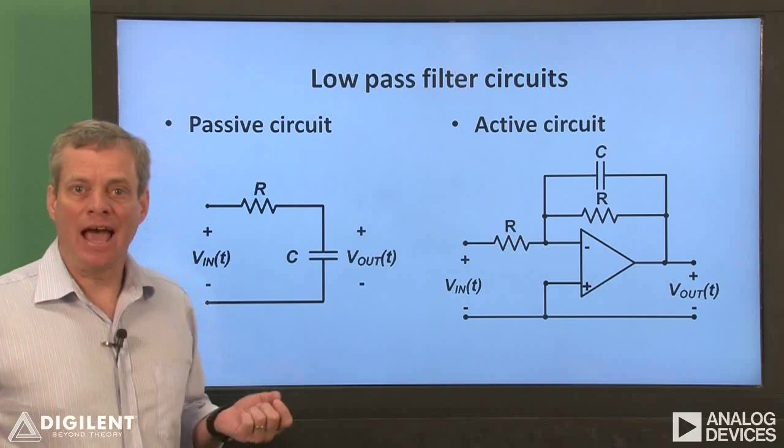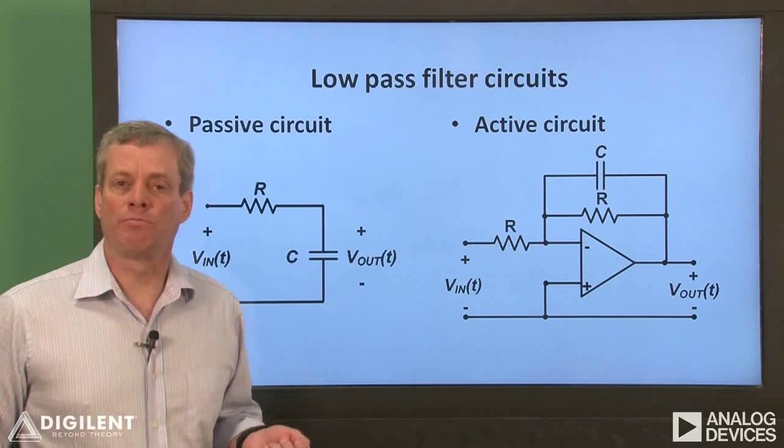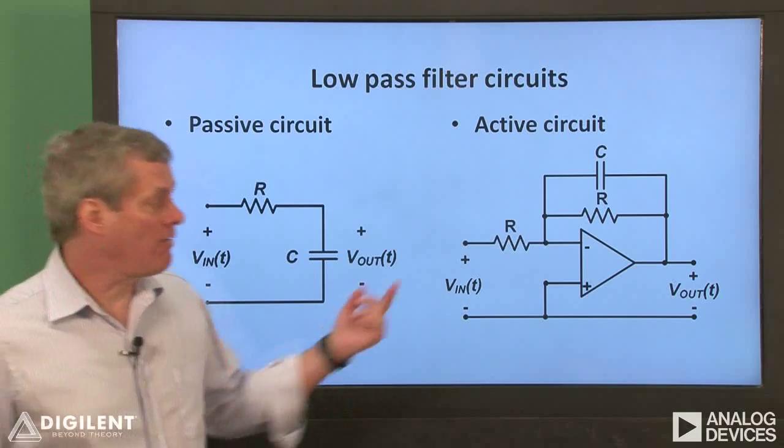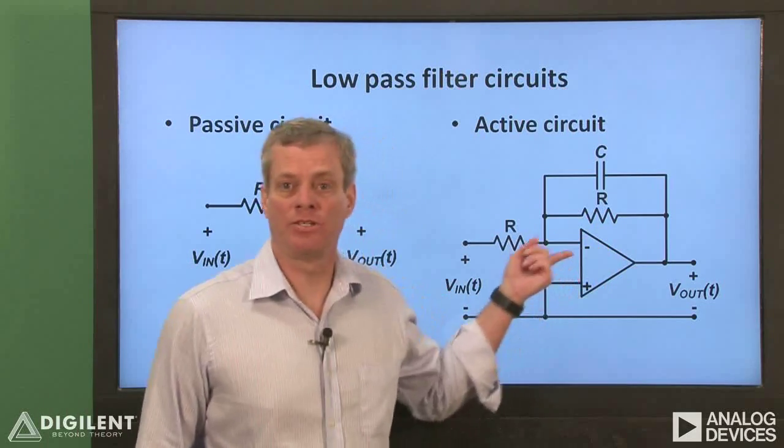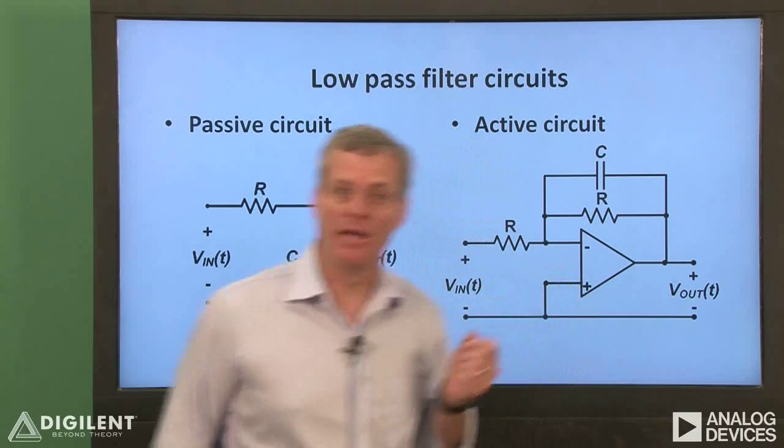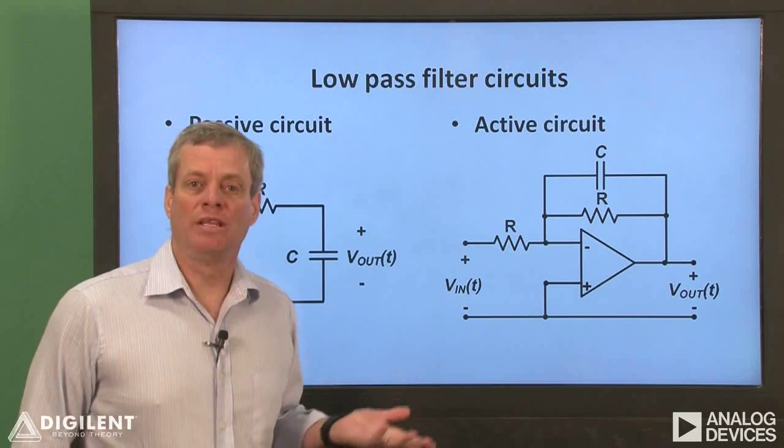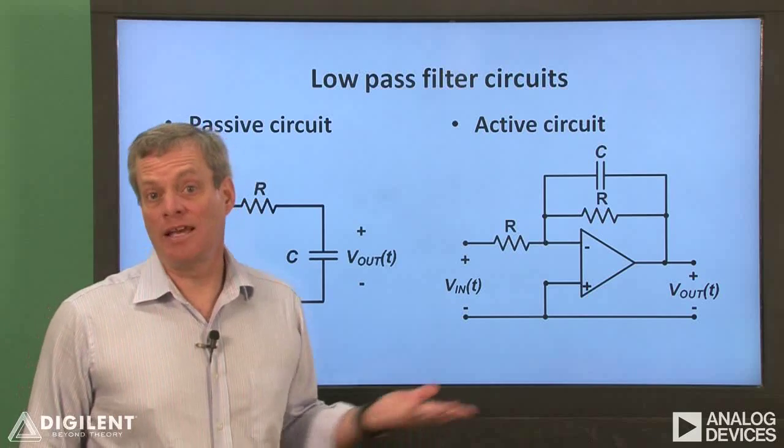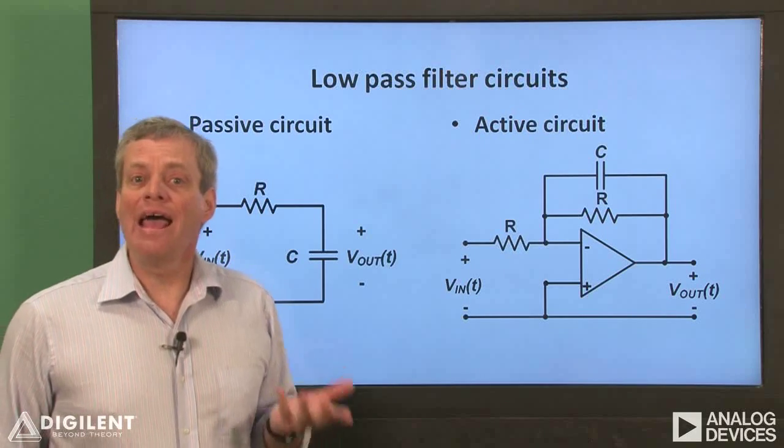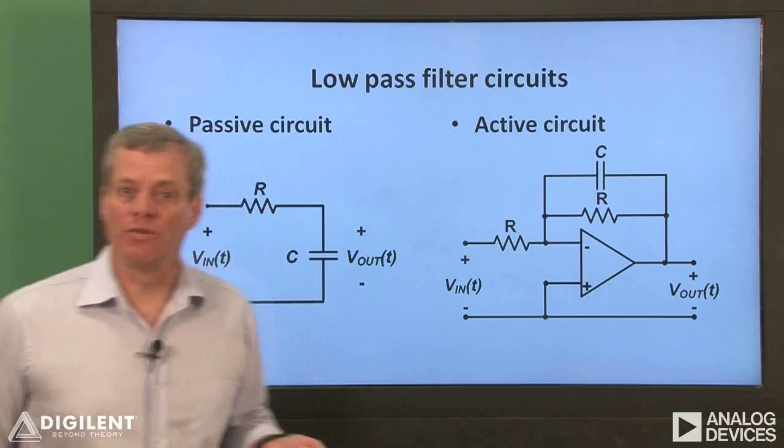The answer is that the active filter performs a couple of important purposes. First, the power supplies of the operational amplifier provide the ability for the circuit to provide power at its output. This means that the filter will be less susceptible to loading effects, as we'll see later in this video, and that the filter can have a gain that's greater than 1.